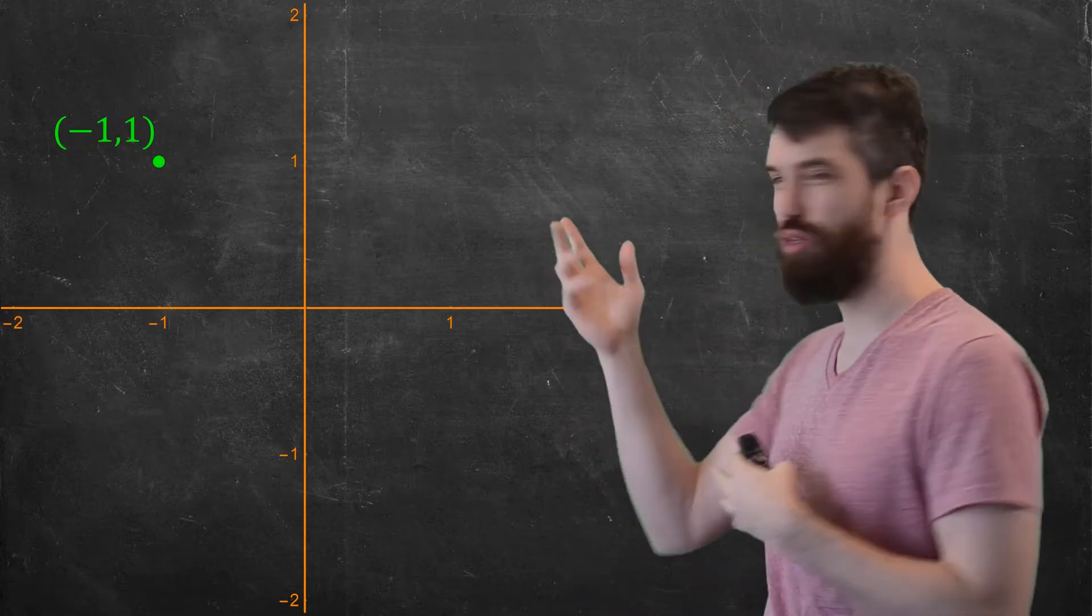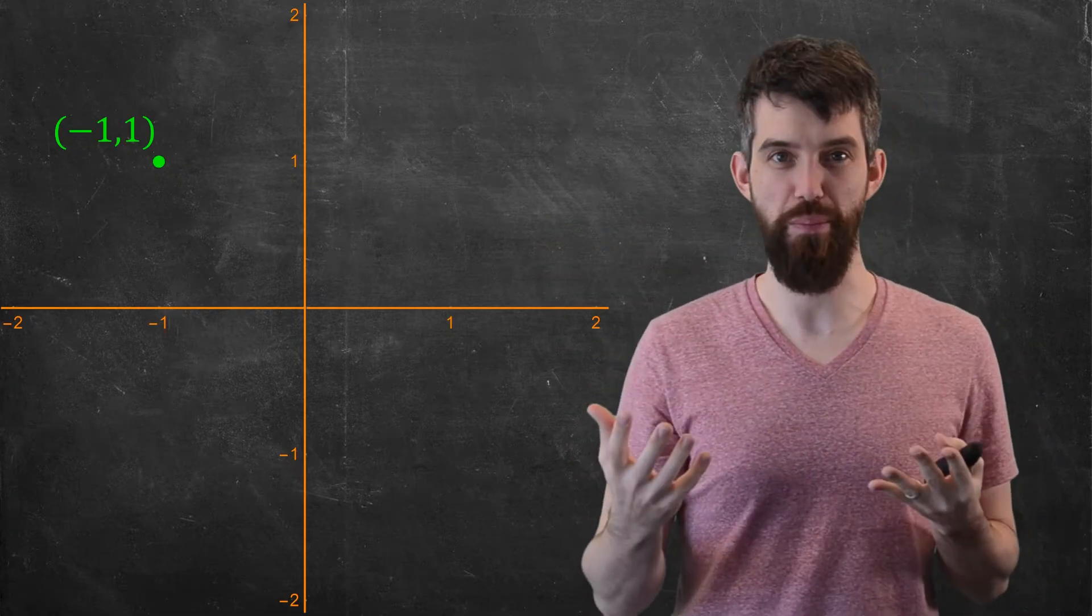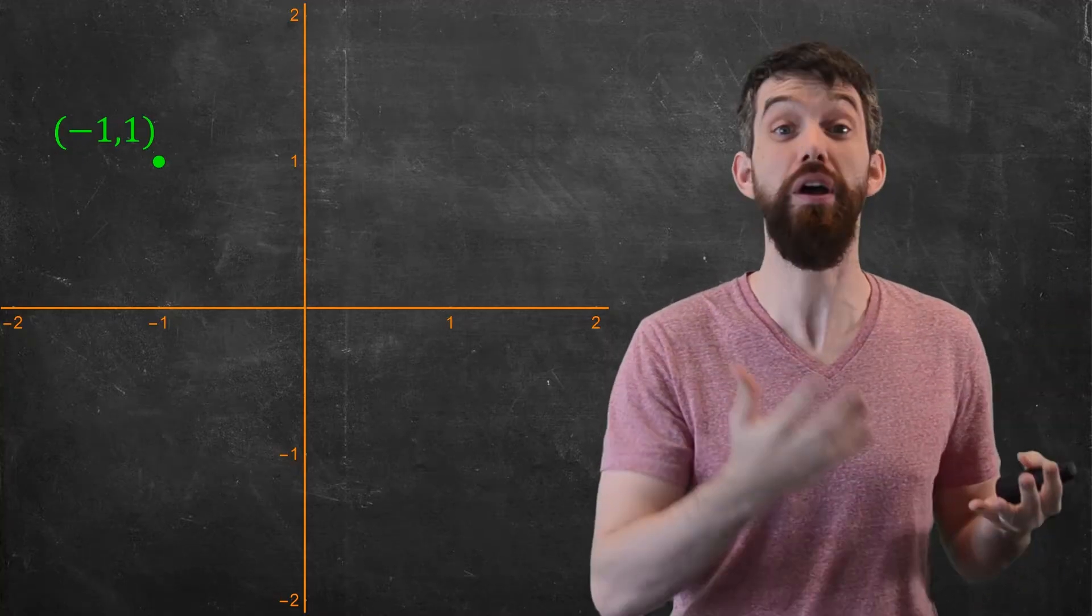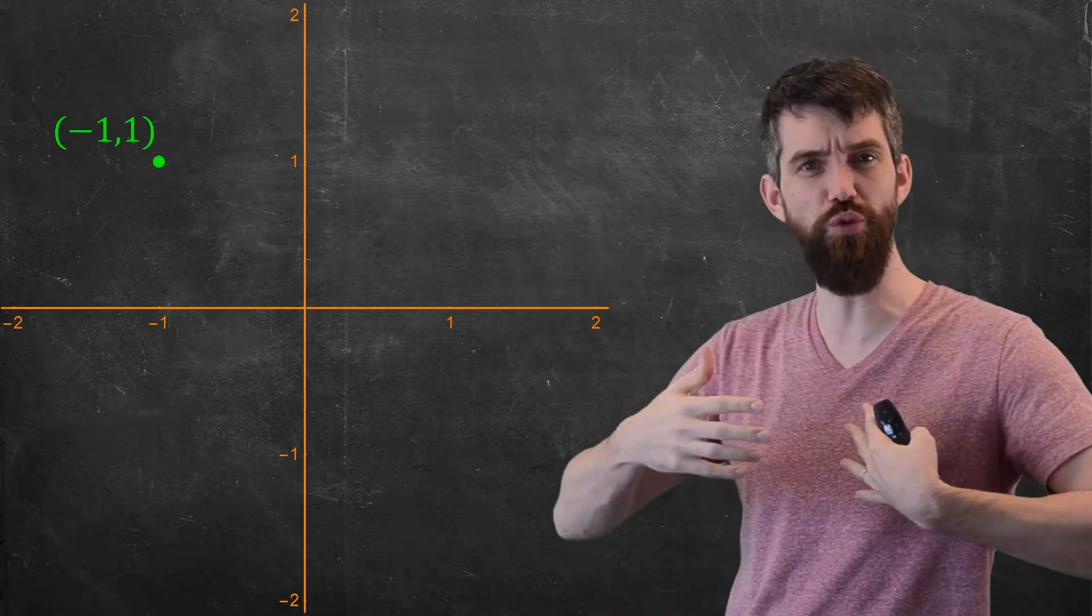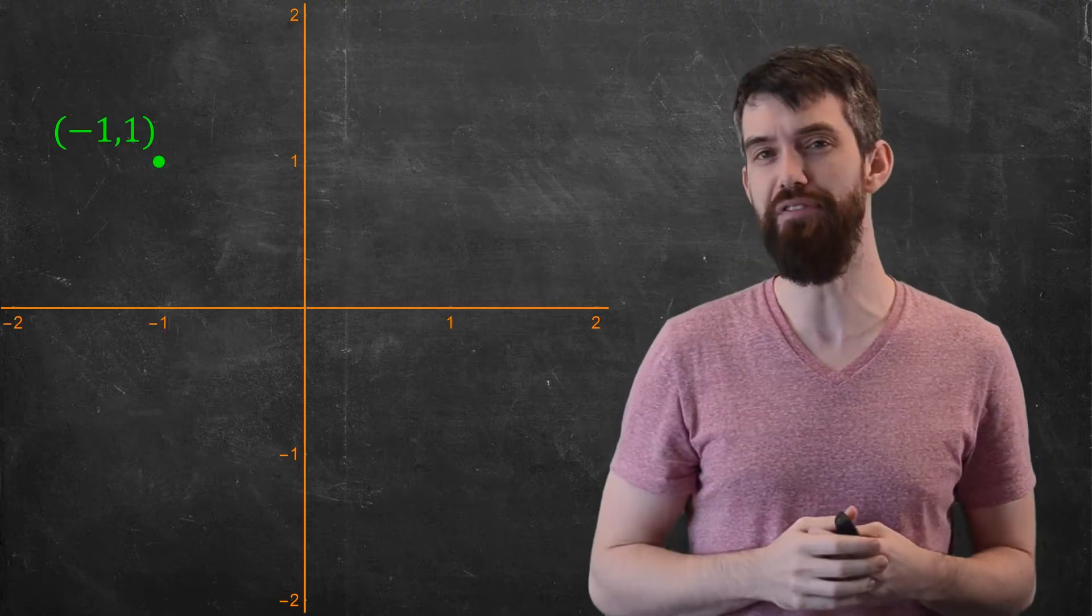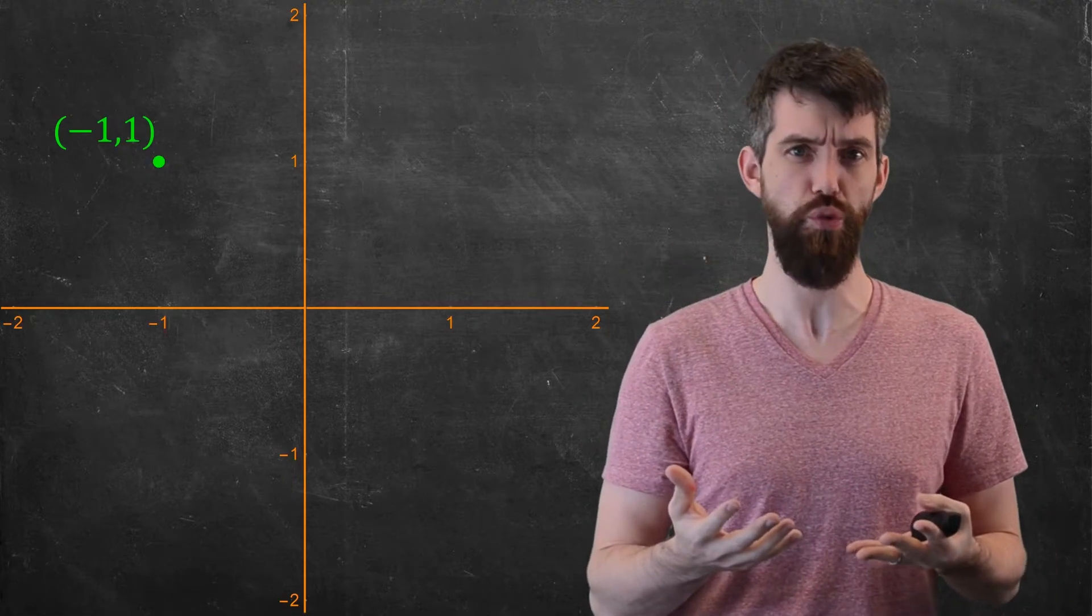Consider a point like (-1, 1). Let's think about what those numbers do. They are points in a particular coordinate system, the Cartesian coordinate system, where the -1 means the x coordinate takes one step to the left, and the +1 means the y coordinate tells you to do one step up.